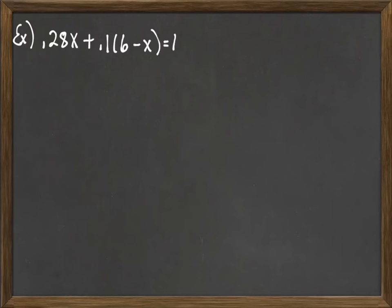Now in this second example, we have decimals as well, except it's a little bit more complicated. 0.28x plus 0.1 times 6 minus x equals 1.2. First we have some multiplication here, so we're going to distribute that 0.1 through to each piece.